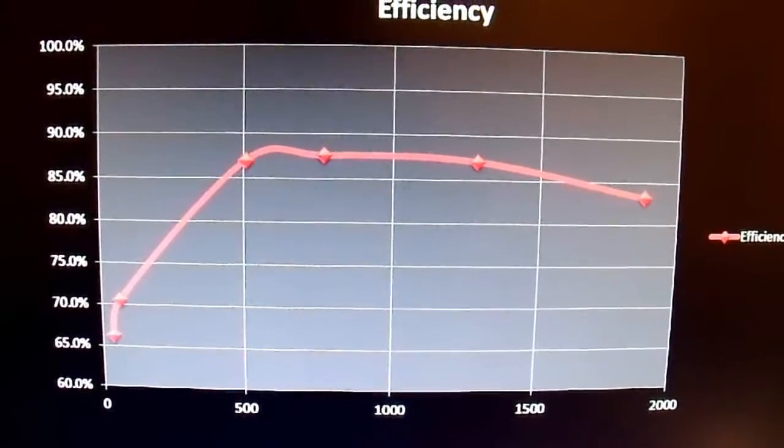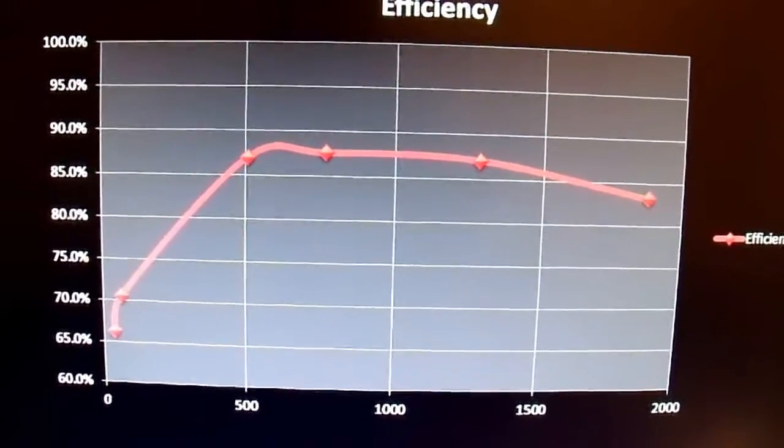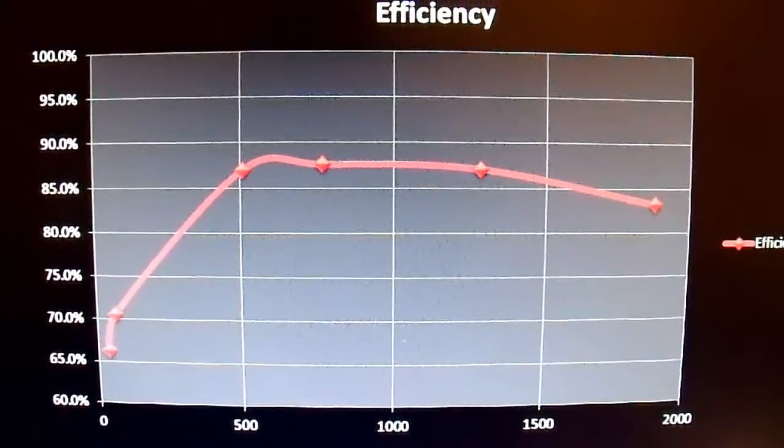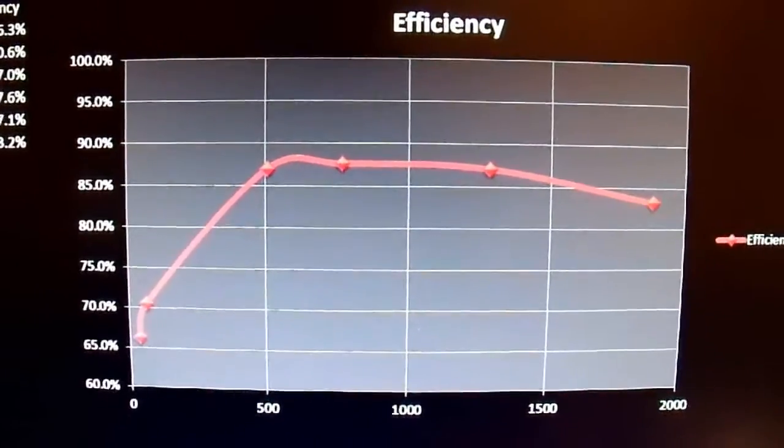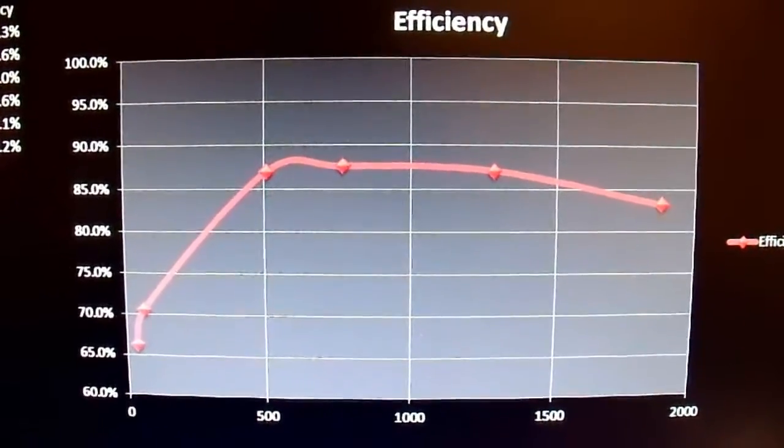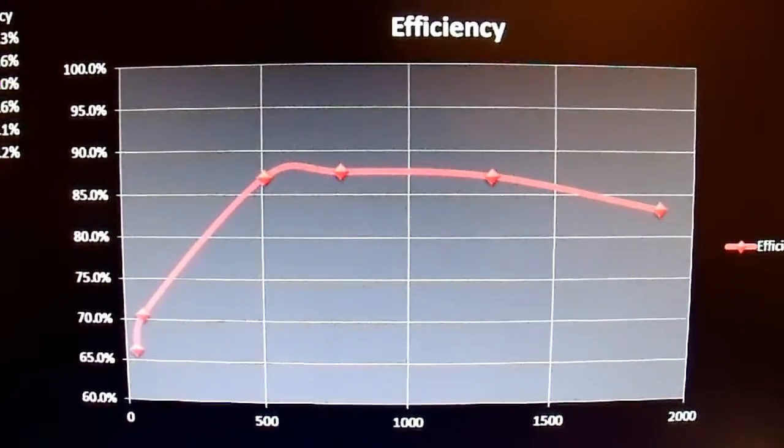At lower output currents, lower output powers, it's not terribly efficient. 65 to 70%, but that's not too bad for a 1500 watt inverter. At least I don't think so. And the efficiency peaks somewhere between 500 watts and 1000, and then it slowly trails off.